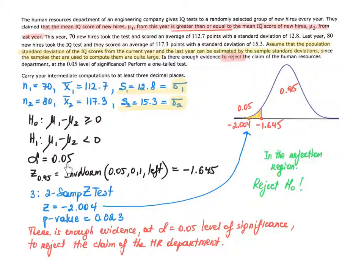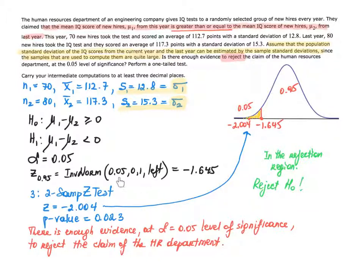State your alpha. This question requires the critical value approach, so I need to compute the critical value. The alternative hypothesis uses the less-than symbol, making this a left-tailed test. I'm separating 5% in the left tail from 95% on the other side. Using inverse norm with 5% area on the left, mean of 0, and standard deviation of 1, the critical value comes out to be negative 1.645.